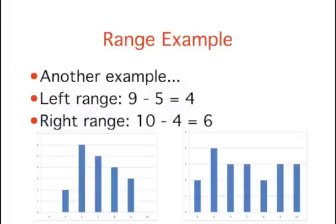Going back to our earlier example of test scores, on the left distribution, the lowest score is 5 and the highest score is 9. Therefore, the range is 4. However, the variability on the right distribution is larger. The lowest score is 4 and the highest score is 10. This makes the range 6.